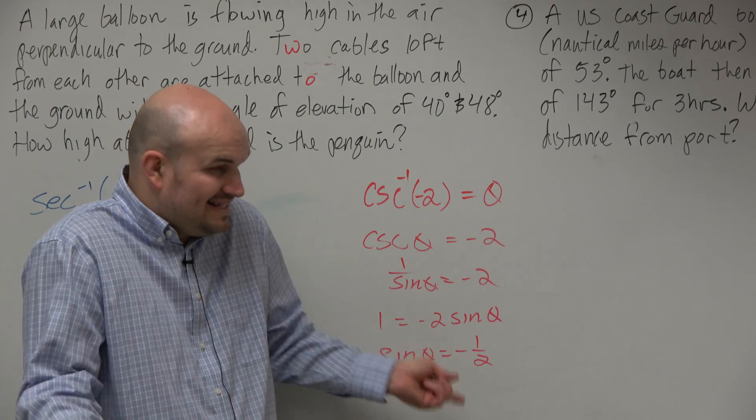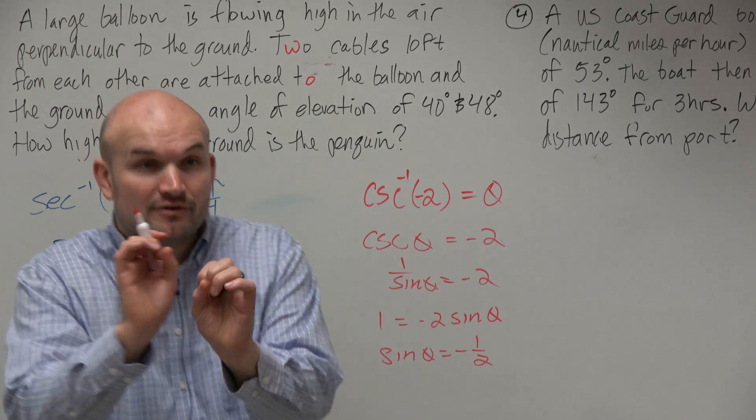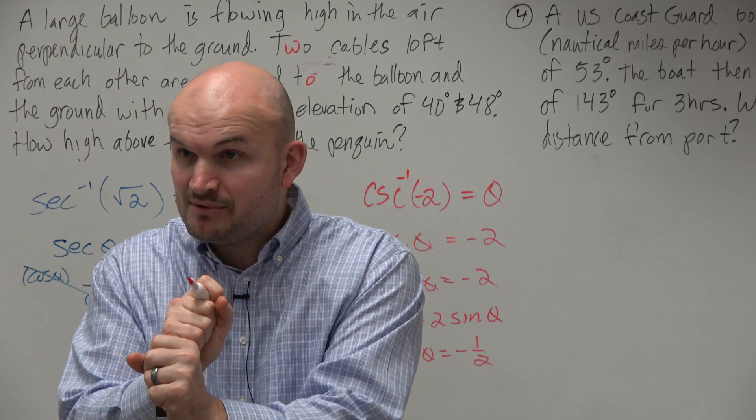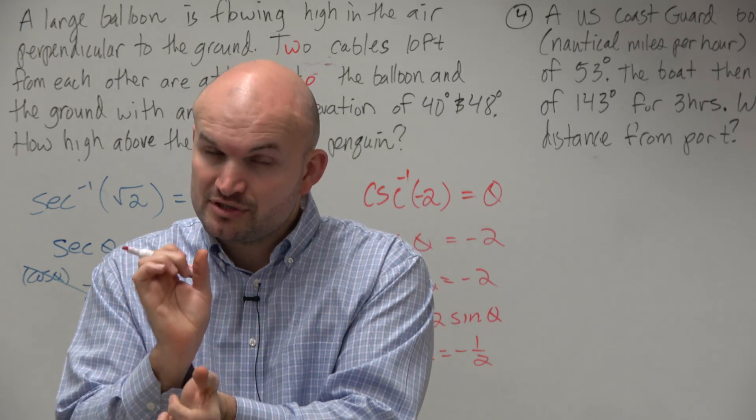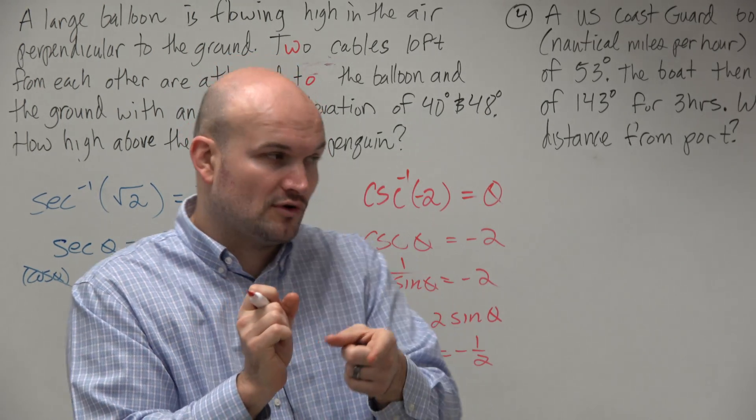Again, we're trying to find the angle. So sine of what angle gives me negative 1 half? And remember, when you're doing inverse trigonometry, you've got to fall within the constraints, the domain restrictions. The domain restrictions for sine is the first and the fourth quadrant.